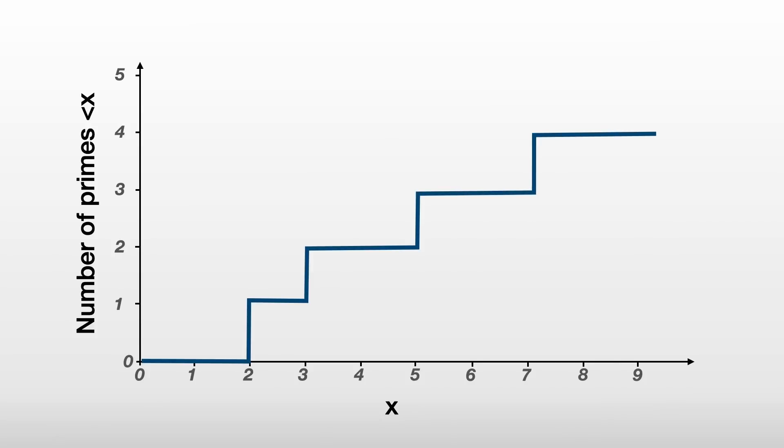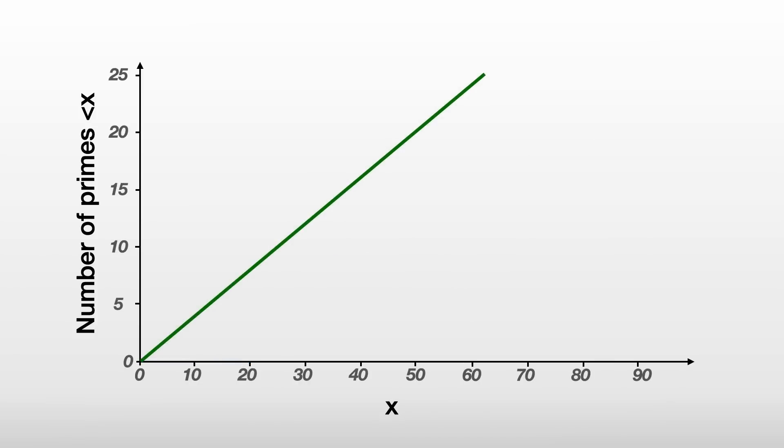So we can see from this that there are four prime numbers between 0 and 10. And if the primes didn't get further apart, the number of primes we encountered would increase linearly with x. However, we can see that in reality, this isn't true.